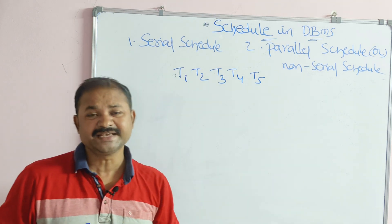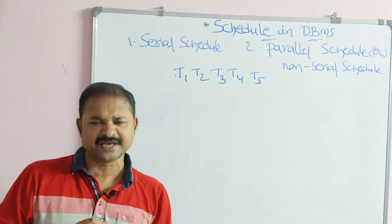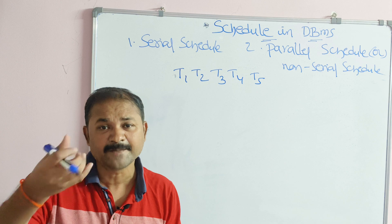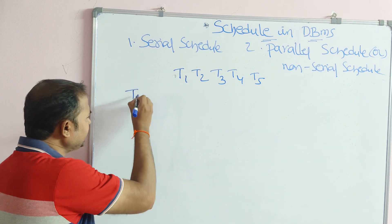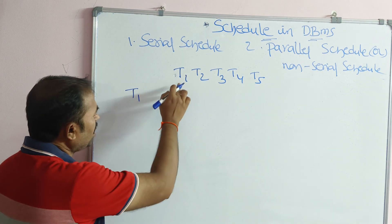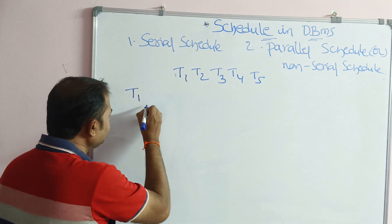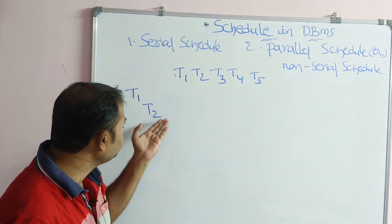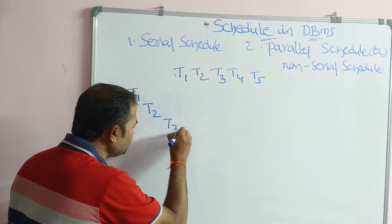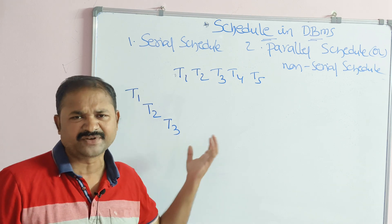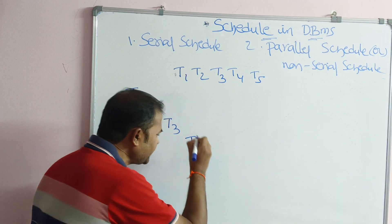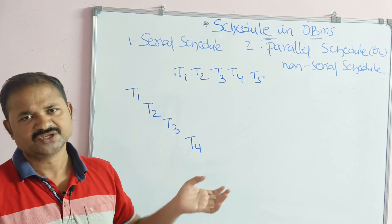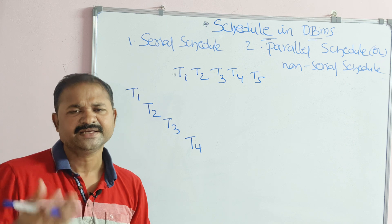First let us see what is a serial schedule. The name itself specifies the meaning — the transactions are executed in serial fashion, meaning one by one. T1 executes first, and after completing T1, T2 execution starts. Once all operations of T2 are completed, T3 starts; once T3 completes, T4 starts; and once T4 completes, T5 executes. All transactions are executed one by one in serial fashion.